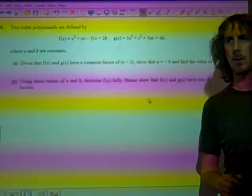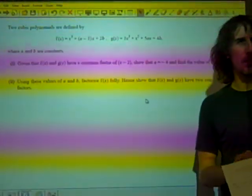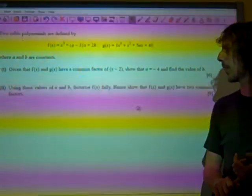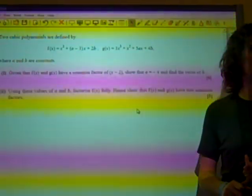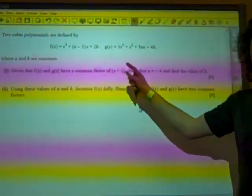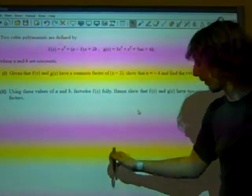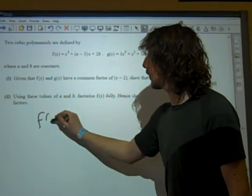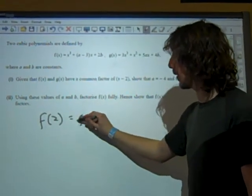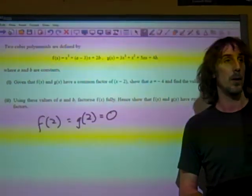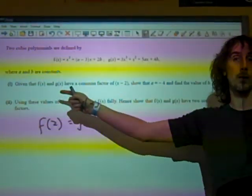What does that mean here? Bear in mind what we've just written down about the factor and remainder theorem. What are we going to try straight away? Put in the minus 2. If x minus 2 is a factor, then that means f of 2 and g of 2 are both equal to 0, because x minus 2 is a factor of both of those things.